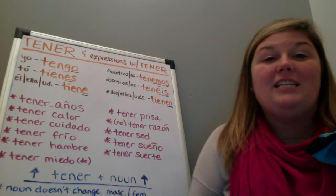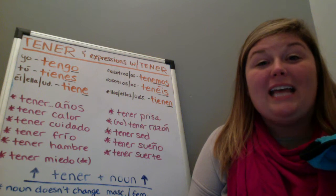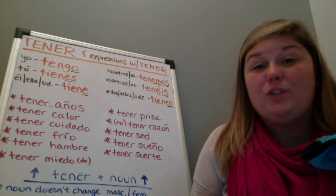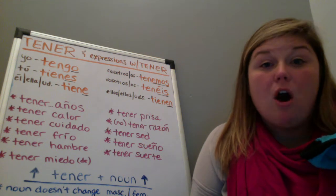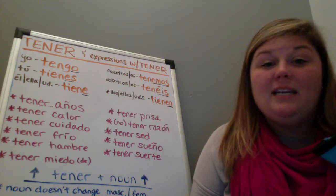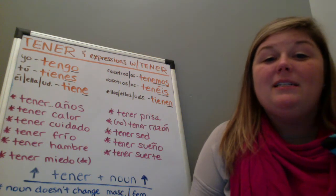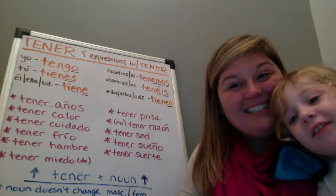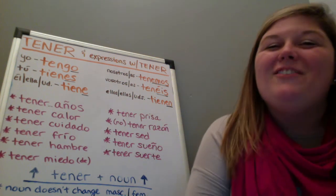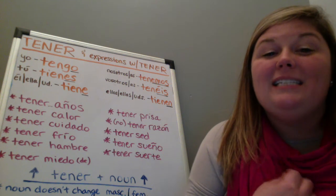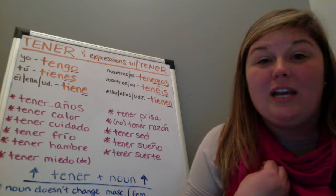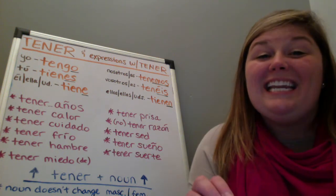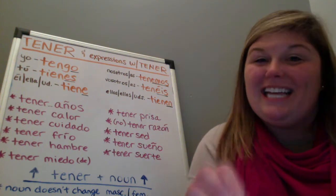The next expression, tener razón and no tener razón, mean to be right — as in correct — and to be wrong, as in incorrect. If you want to say 'I am right,' you would say tengo razón. If you want to say 'you are wrong,' you would say no tienes razón.